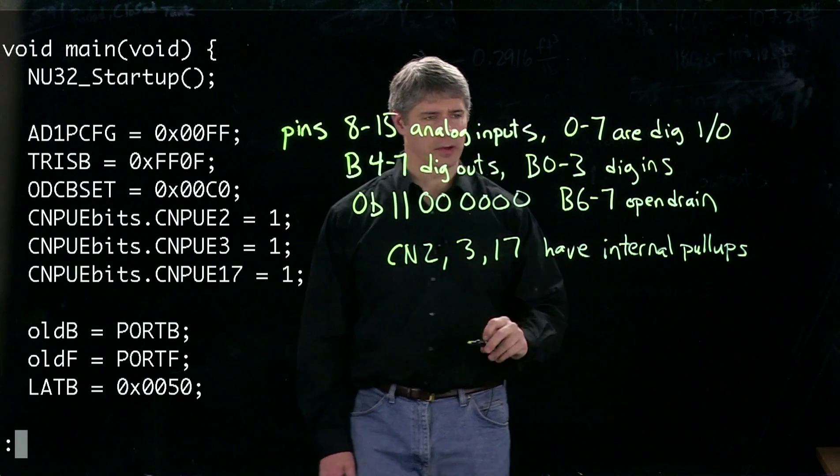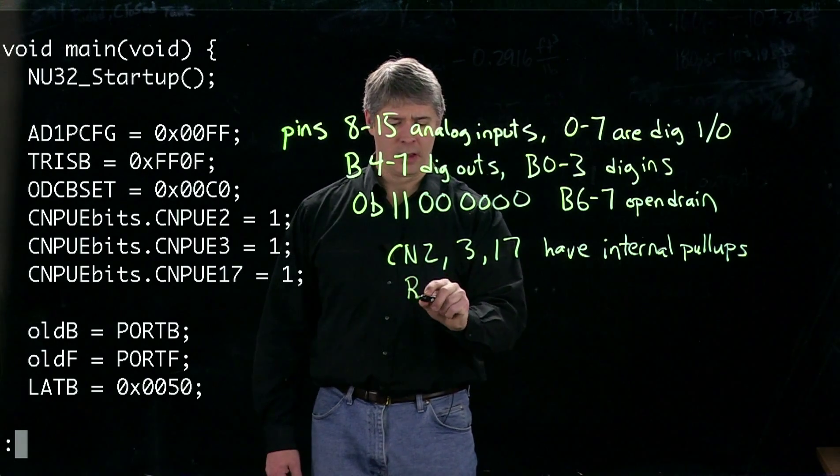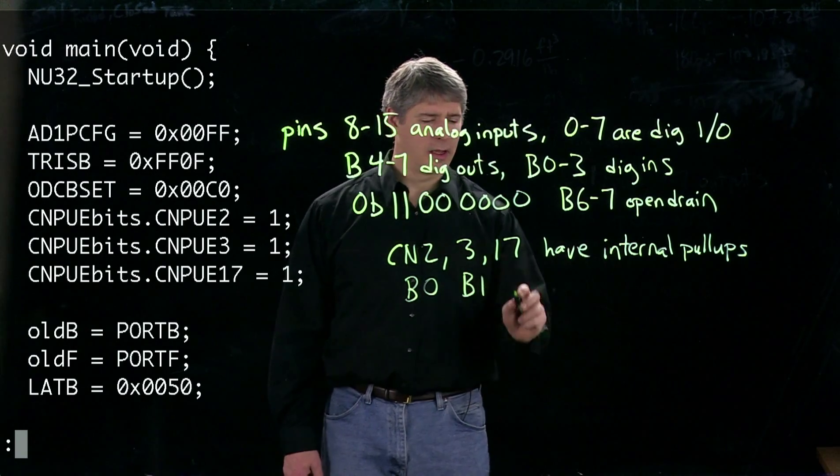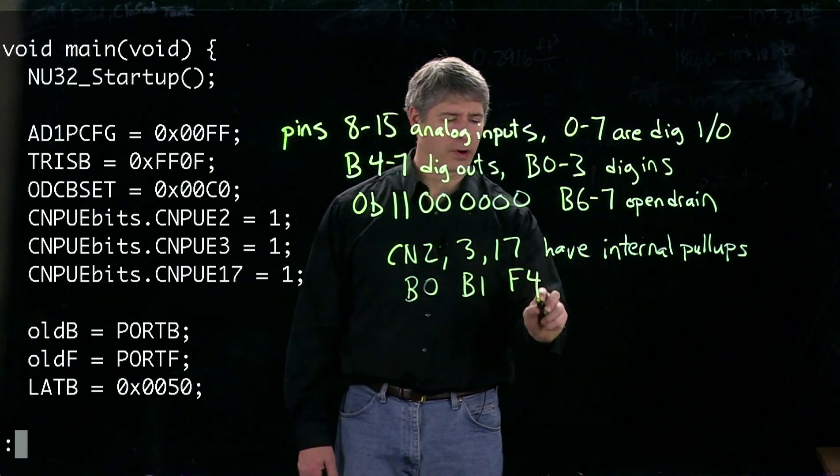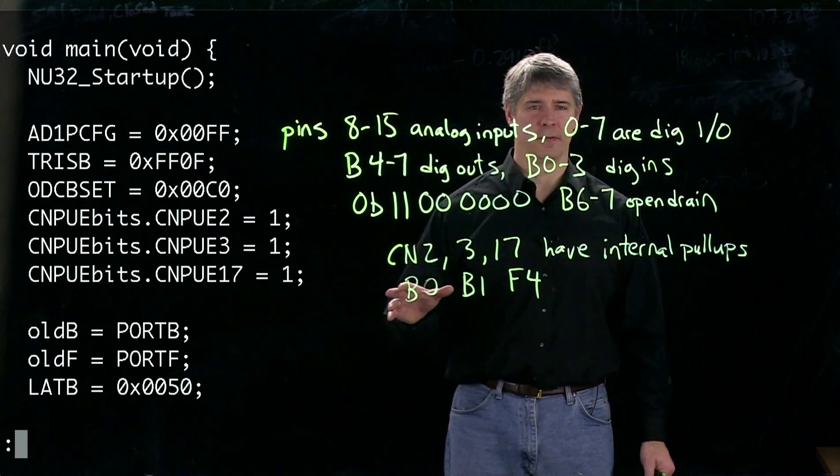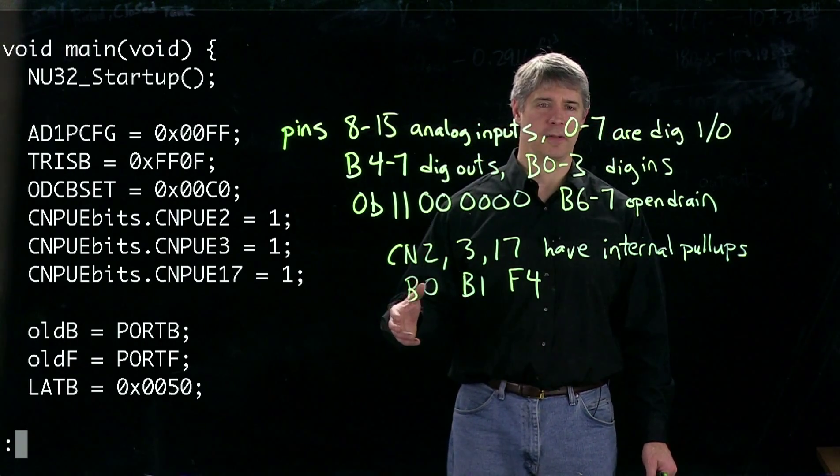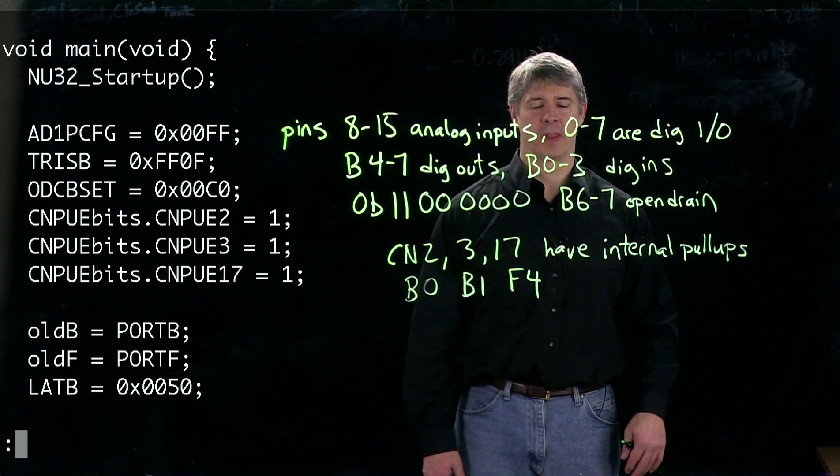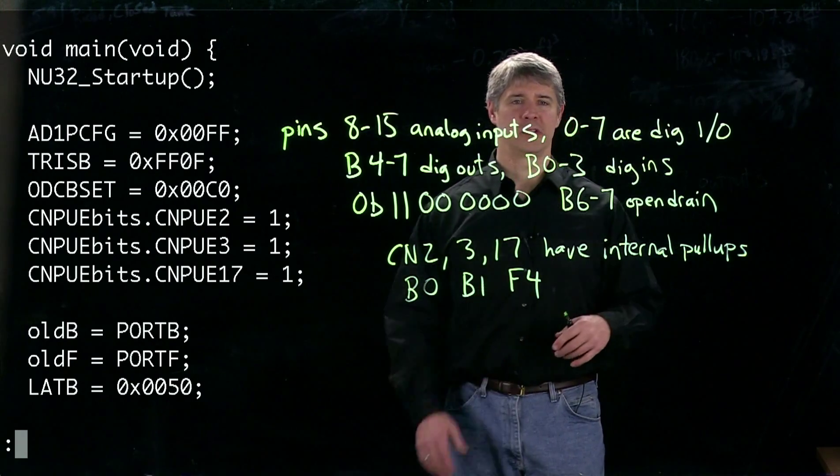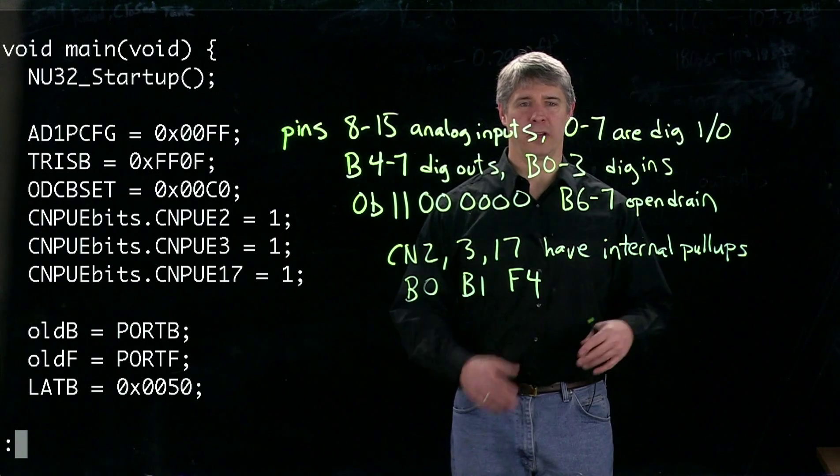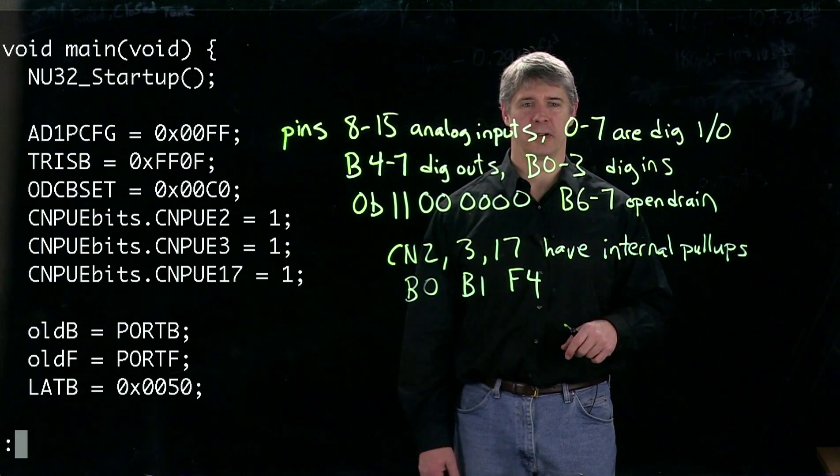If we consult the pinout for our PIC, we can see this corresponds to pins B0, B1, and F4. It's not necessary that the pins be involved in change notification for us to use the pull-up resistors. It's just that those 22 change notification pins have them available, whether or not we use those particular pins in the change notification.